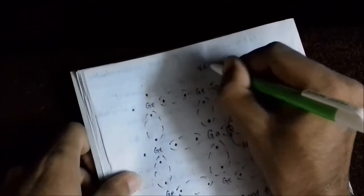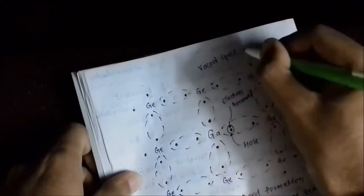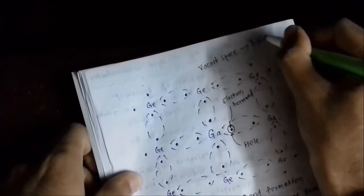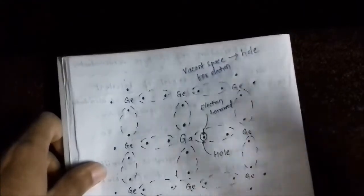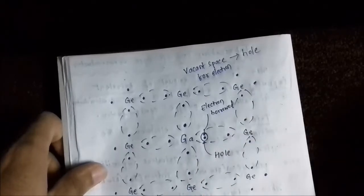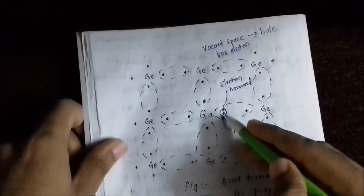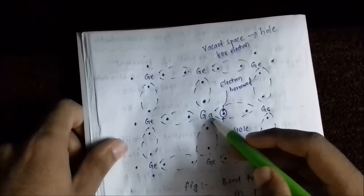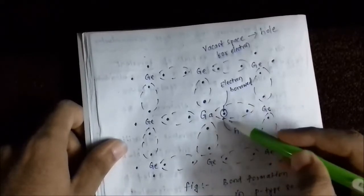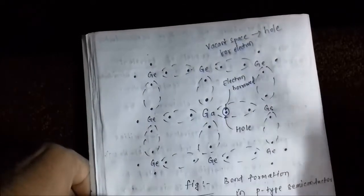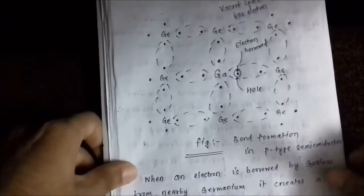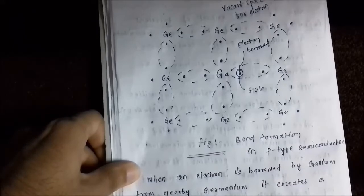This vacant space produced due to the absence of an electron is called a hole. A hole is nothing but a vacant space — an empty space waiting for an electron to occupy it. Another electron is borrowed by gallium and thus the covalent bond is completed. This vacant spot, which is a hole, is responsible for current flow in P-type extrinsic semiconductors.